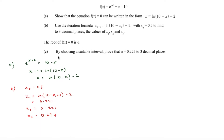The final part asks us to choose a suitable interval and prove that α = 0.275 to three decimal places. We use the change of sign method from the previous video. We set f(x) = e^(x+2) + x - 10 = 0.